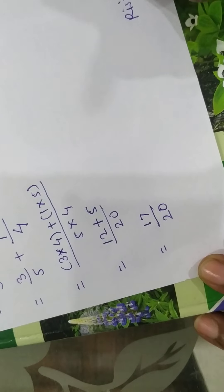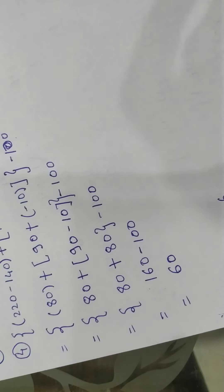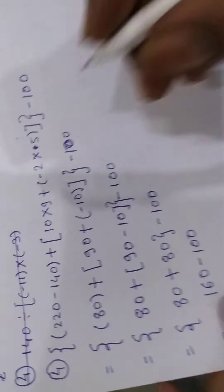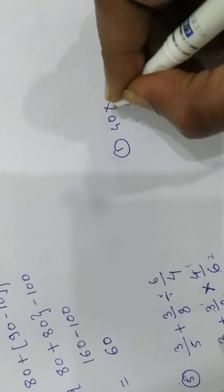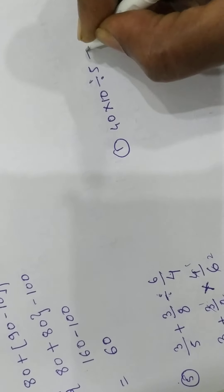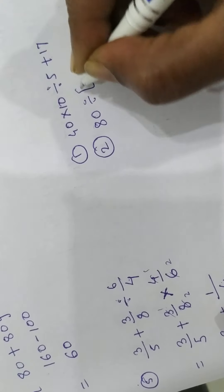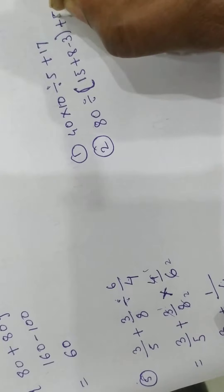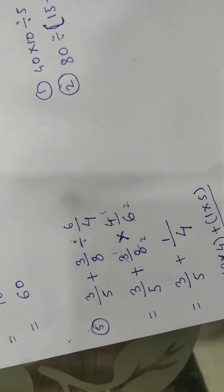Now I have given some practice examples: 40 into 10 divided by something plus 70; 80 divided by 50 plus 8 minus 3 plus minus 5. Thank you for watching this video, please like and subscribe.